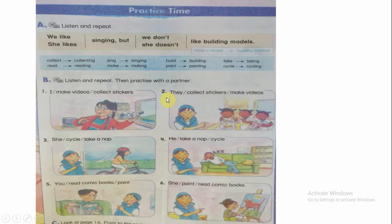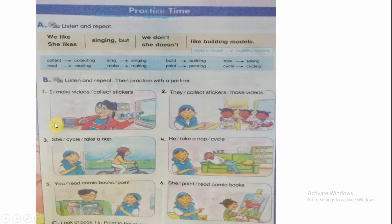Number two — you have three seconds to think. They like collecting stickers, but they don't like making videos. Number three: She likes cycling, but she doesn't like taking a nap.